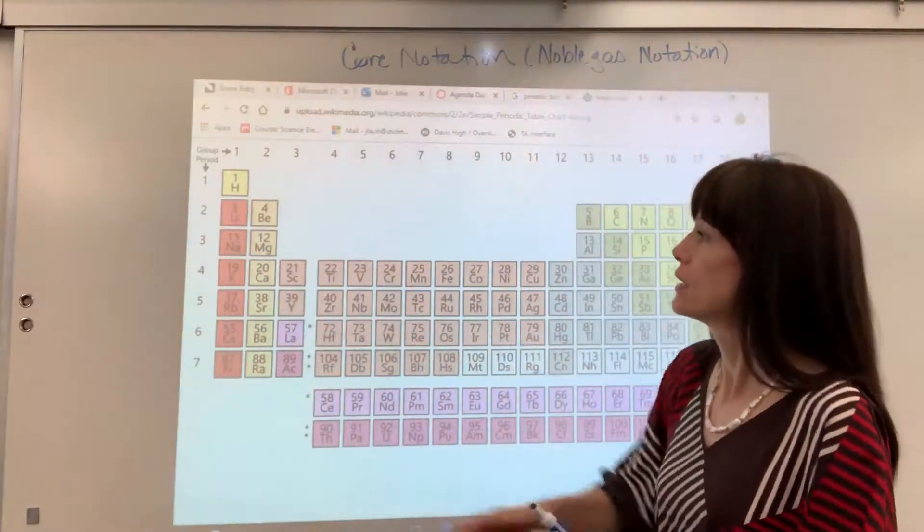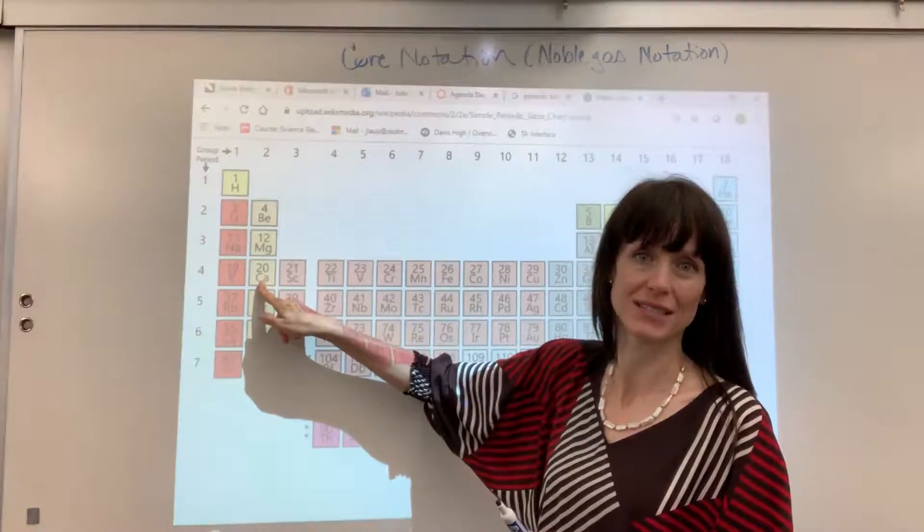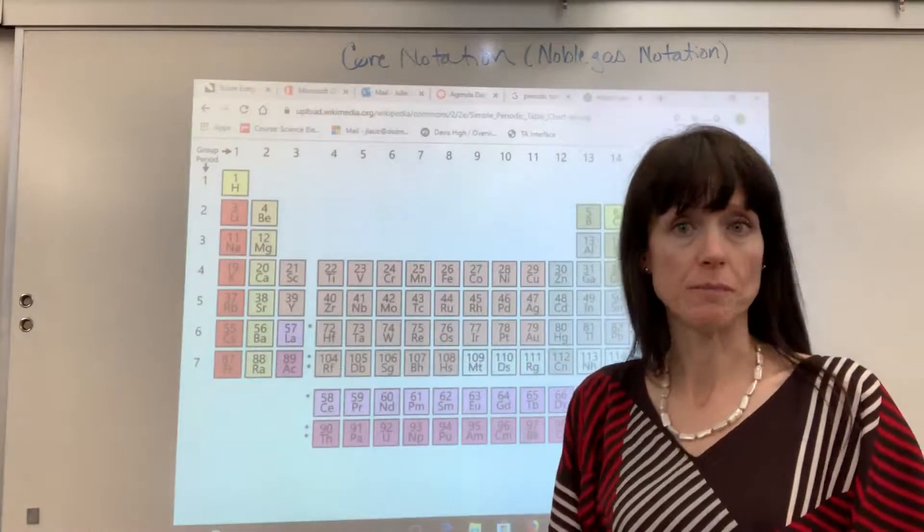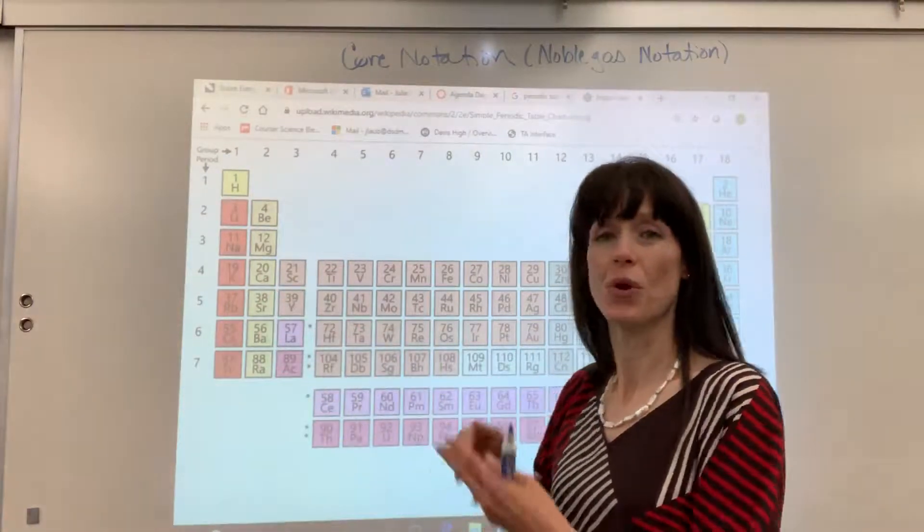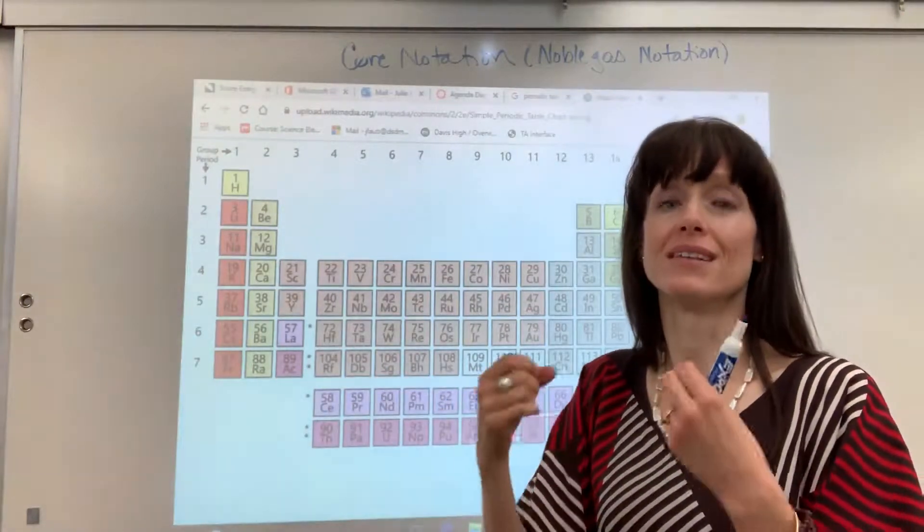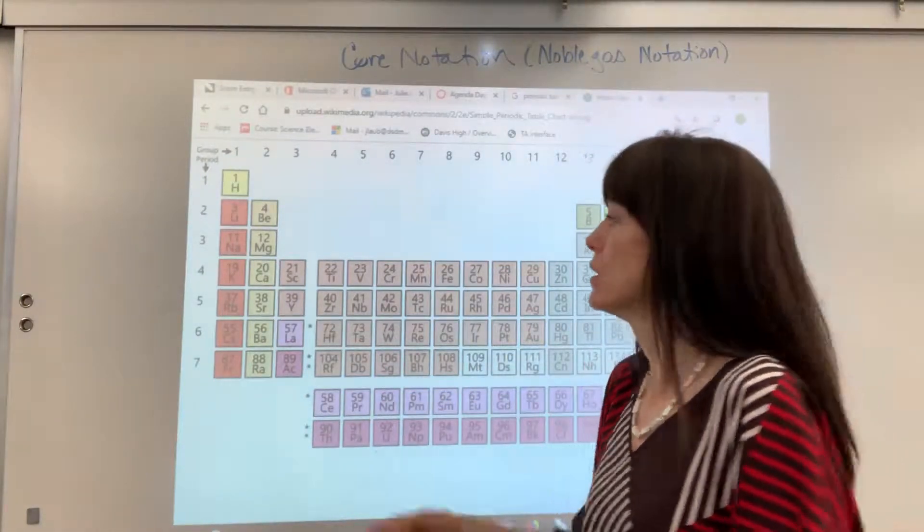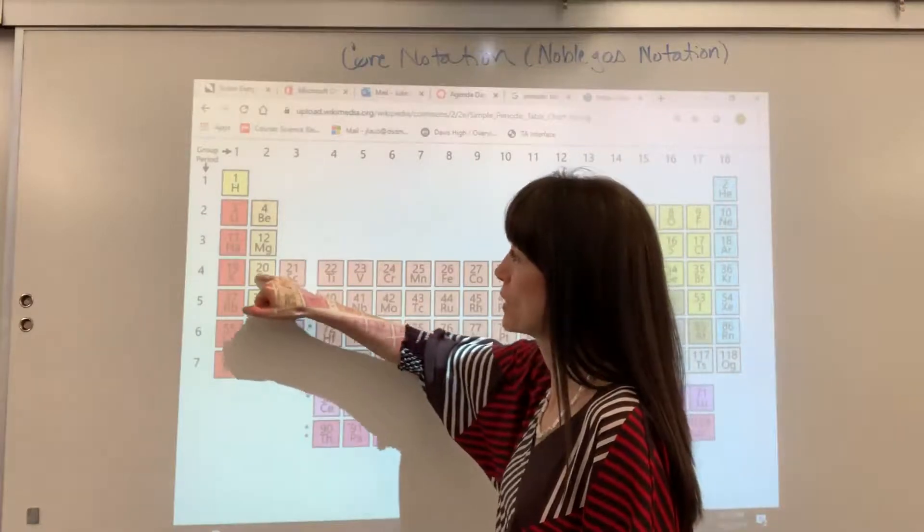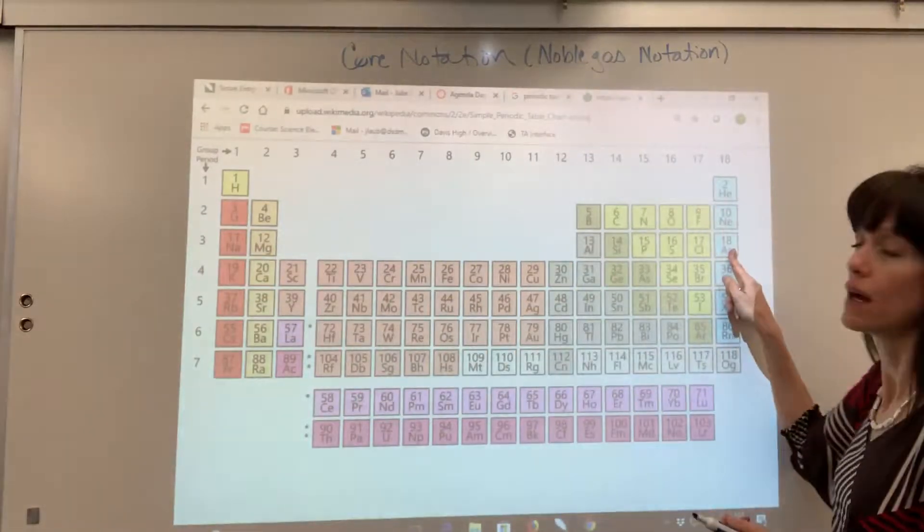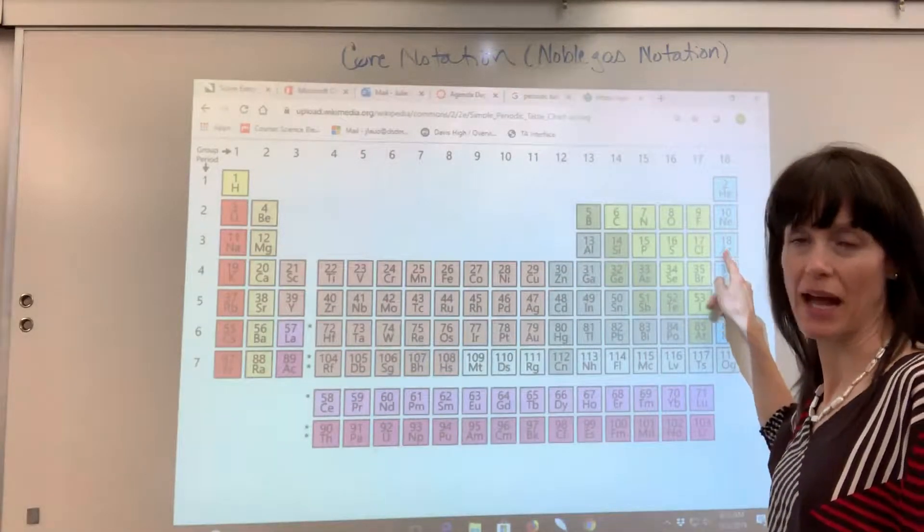Let's take calcium as our example. So, here's what you do. You find the element and you go back an atomic number until you hit the last noble gas. So, here's calcium. I go back 20, 21, come back to 18. There it is. There's the noble gas.